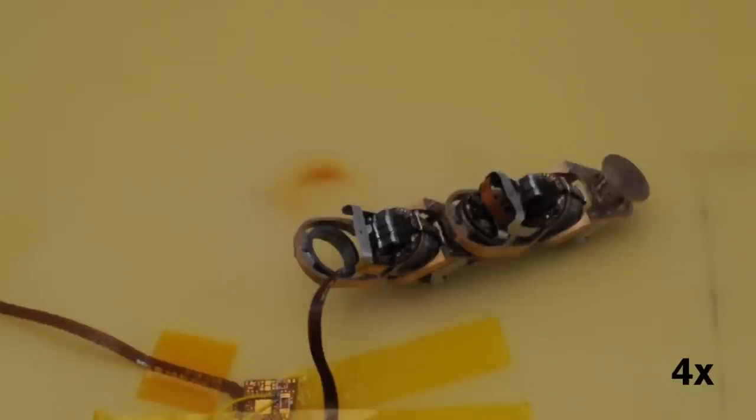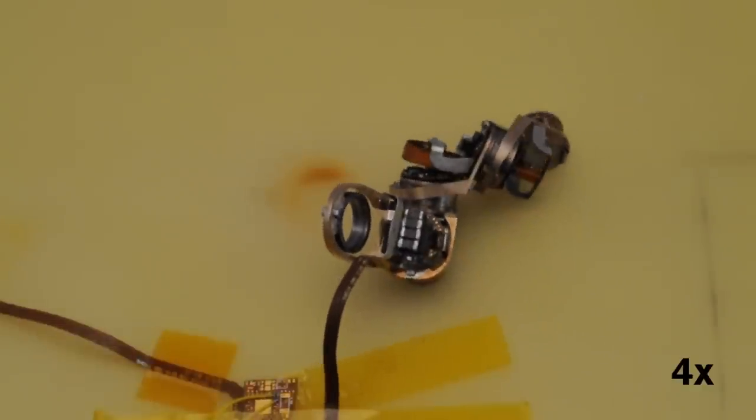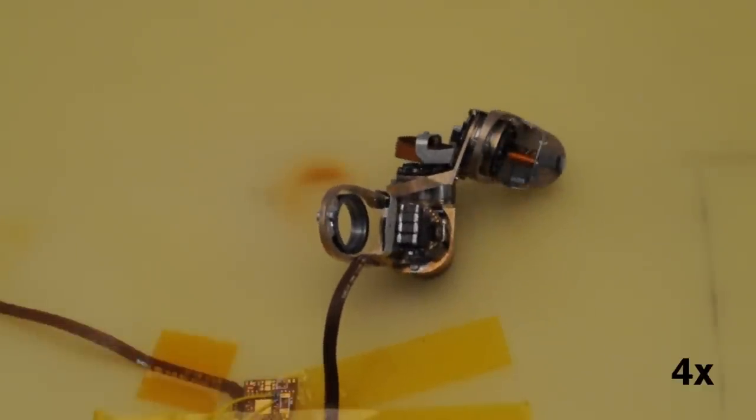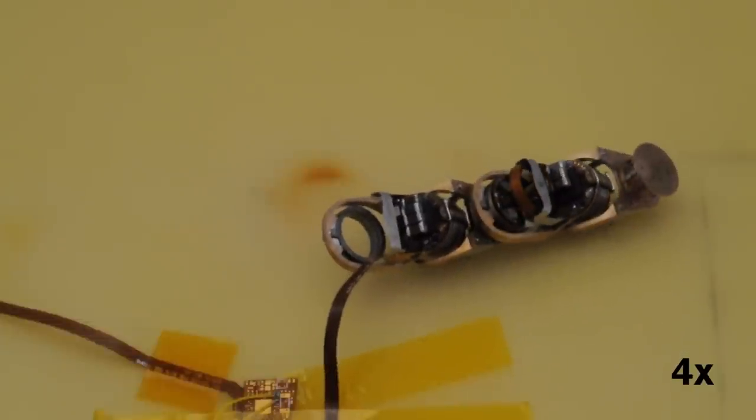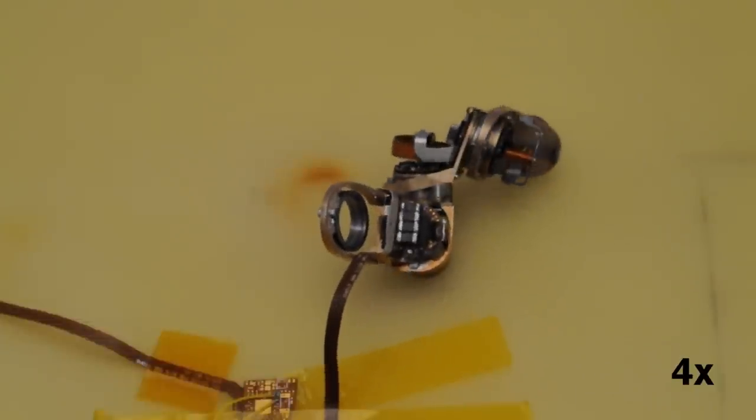Once we had one module working, we made four more. So here's a chain forming shapes. It starts out as a line, and then it forms a left-handed helix, a right-handed helix, a periscope, and an L-shape.